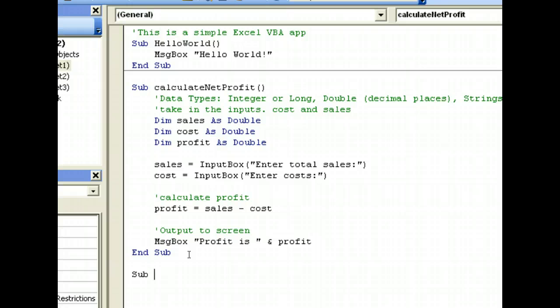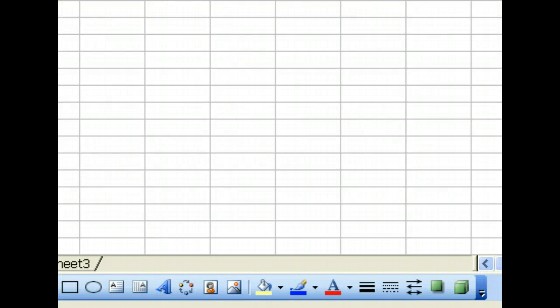Let's create a new method for it. Create a method, sub. Call it, let's say, calculateVolume. And enter. So, we have to declare variables first to store our values.